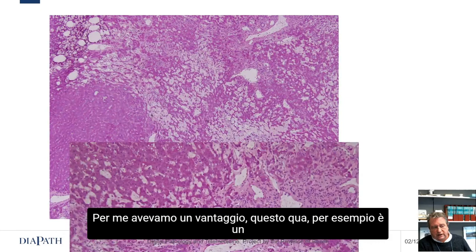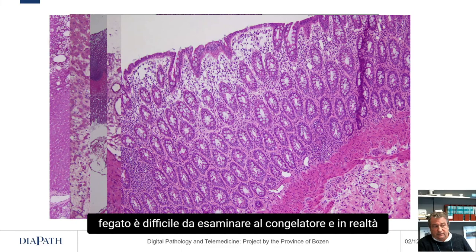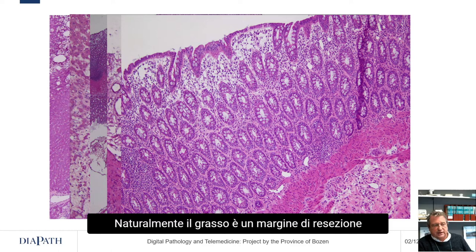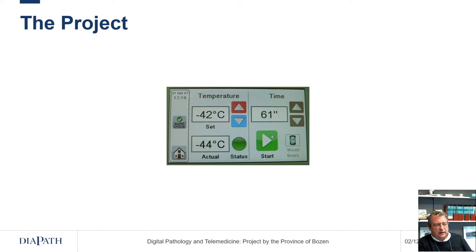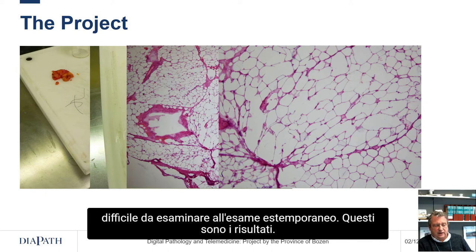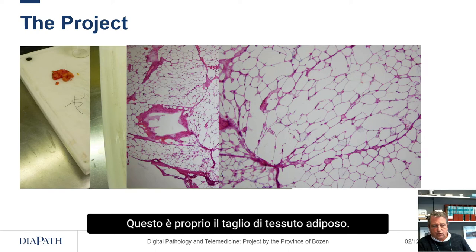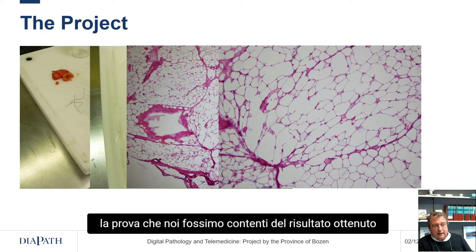In addition, there is a system for freezing the pieces which we found very useful. The tissue section is oriented in an optimal way and the quality of the protein section is decidedly improved. For example, a liver — difficult to examine — gave us excellent results, though the problem of fat remained. This is a colon: the fat at a resection margin and the quality at the level of the mucosa is very good. With this system, the temperature of the piece being examined may vary. This is fat tissue, very difficult to examine on frozen sections, and these results from cutting fat tissue were very satisfying.